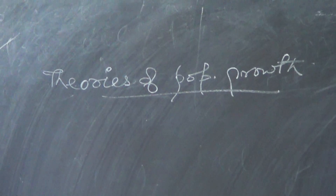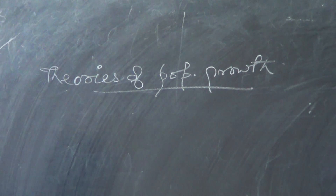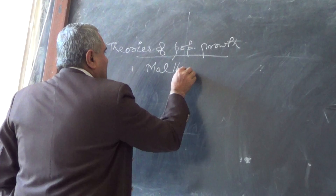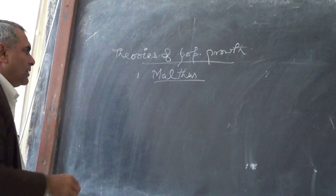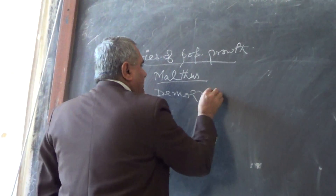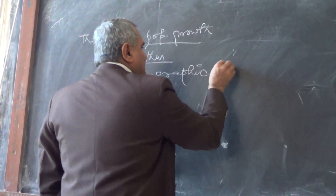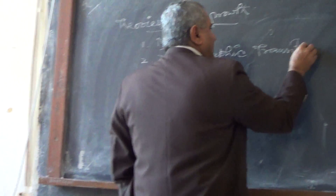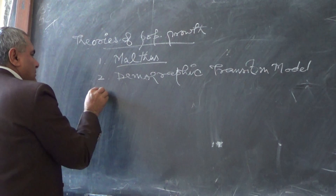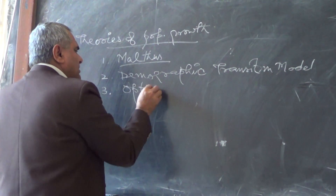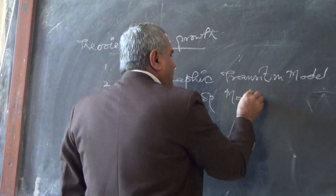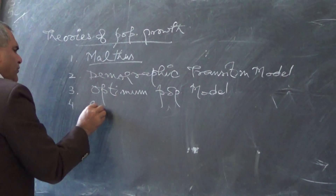Theories of Population Growth. The first theory about the population was given by Malthus, that is called the Malthusian Model. Second, we have the Demographic Transition Model. The third is the Optimum Population Model. And fourth, there is the Economic Theory of Fertility.